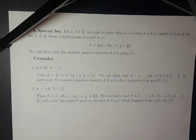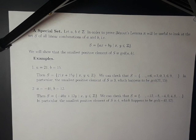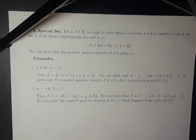To instantiate this set with a couple of examples: from before, with a equals 21 and b equals 15, the set S is the set of all linear combinations of 21 and 15. We can check that S consists of all the multiples of 3. In particular, the smallest positive element of S is 3, which is the GCD of 21 and 15. Similarly, if a equals negative 40 and b equals 12, then S would be the set of all linear combinations of negative 40 and 12. We can check that S consists of all the multiples of 4, and in particular the smallest positive element of S is 4, which is the GCD of negative 40 and 12.